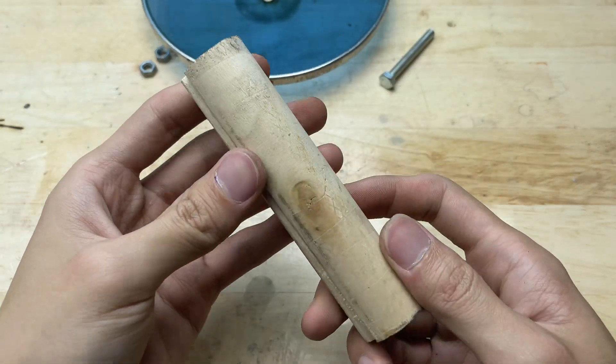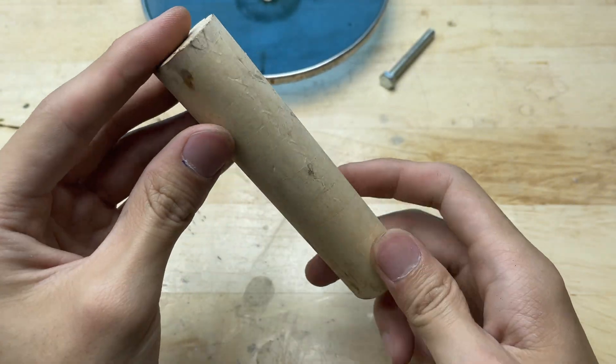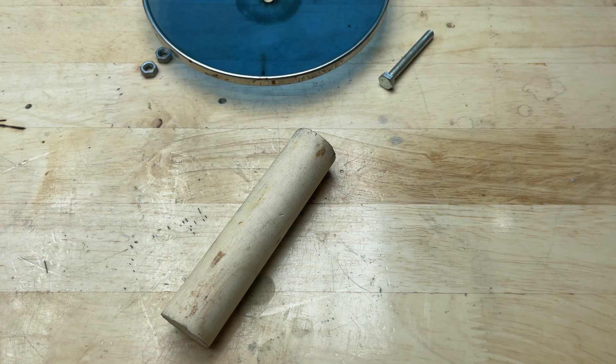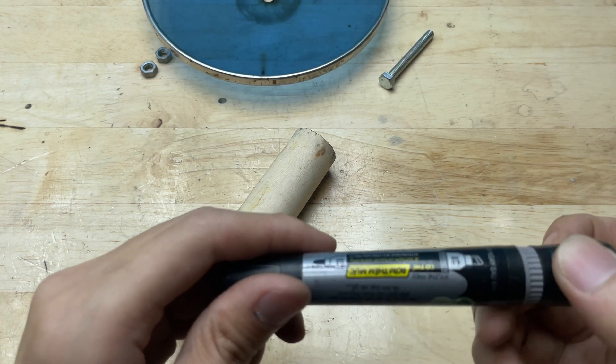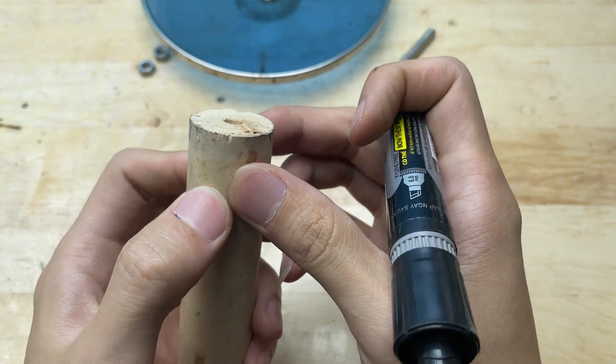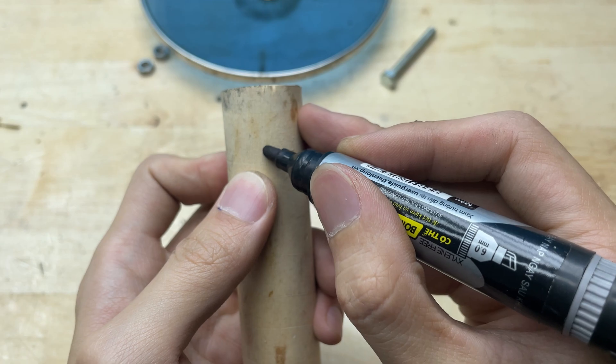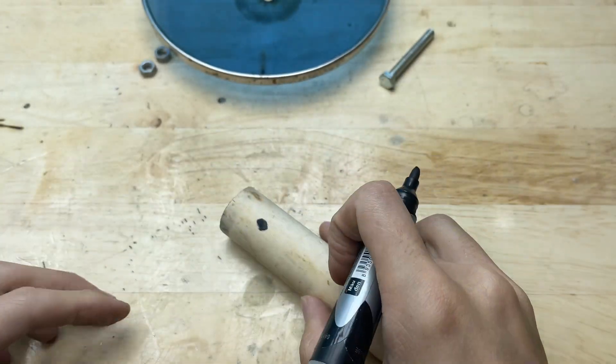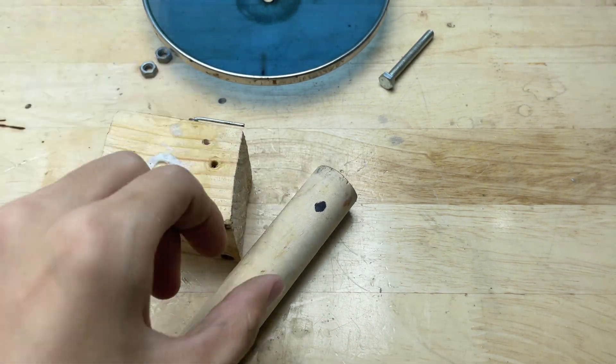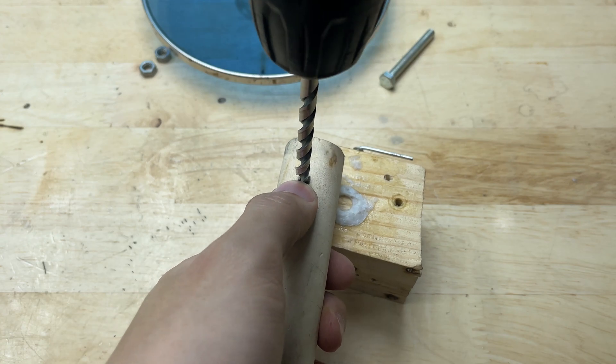Grab a small piece of wood, around 10 centimeters long. Next, I'll mark where I want to drill a hole on the wooden handle. Drill a hole in the handle, just big enough for the bolt to go through.